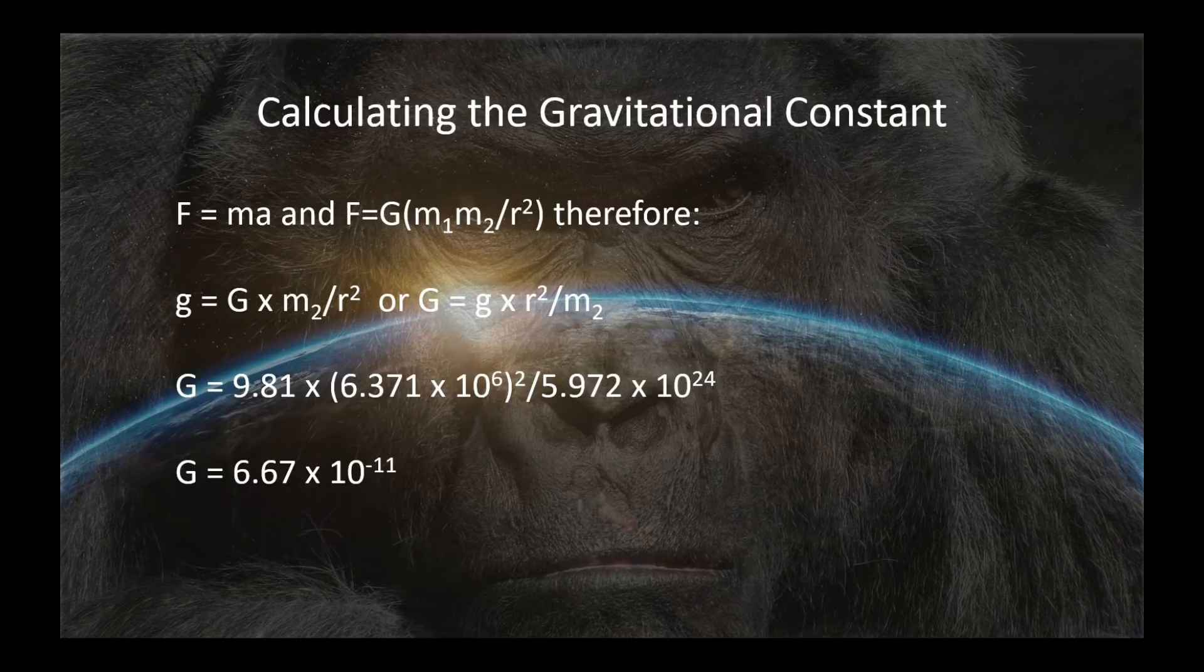Cavendish gave us the missing piece. We knew 9.81 meters per second per second. We knew that one. We knew the radius of the earth, 6.371 × 10^6. All we needed was the mass of the earth to go with it: 5.972 × 10^24. Do that very simple arithmetic, and G is equal to 6.67 × 10^-11. That's the way it works out.